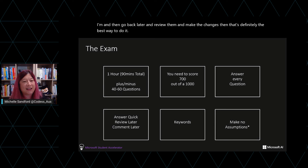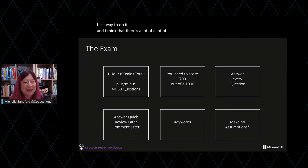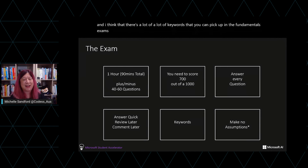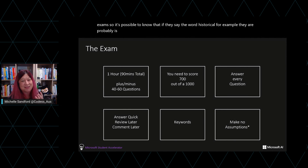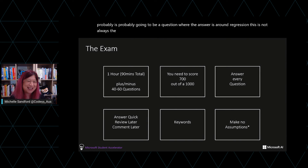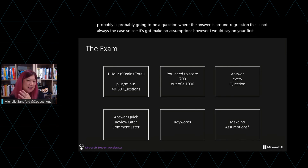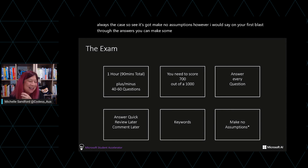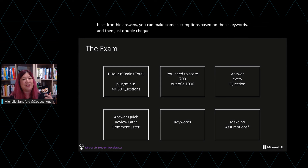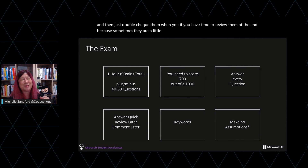There are a lot of keywords you can pick up in fundamentals exams. For example, if they use the word 'historical', the answer is probably going to be around regression — though this is not always the case, so make no assumptions. On your first pass through the answers you can make some assumptions based on those keywords, then double check them when you review at the end, because sometimes they are a little tricky. I put a few examples of that in these modules so we can talk about it.